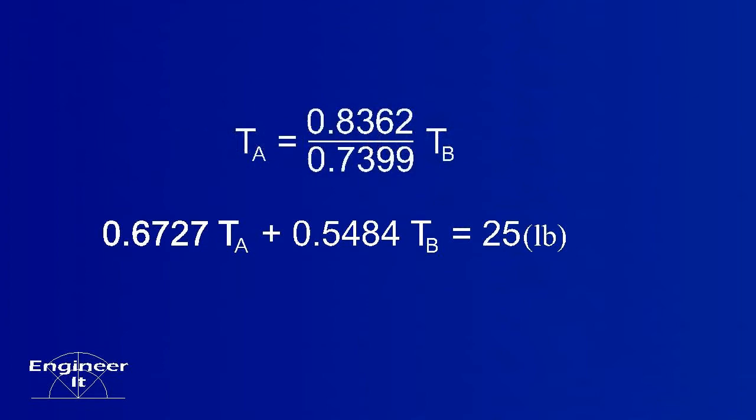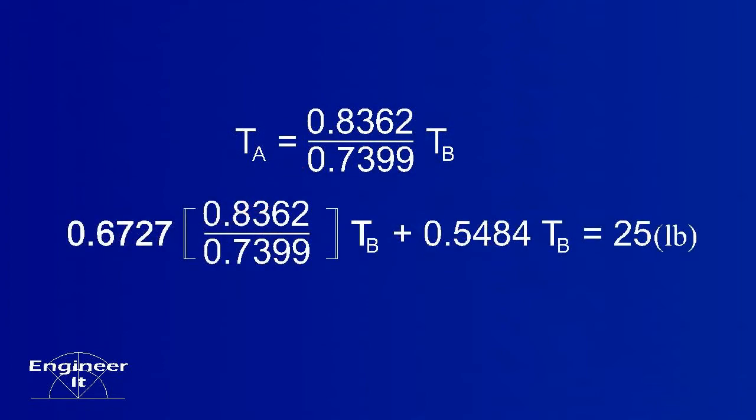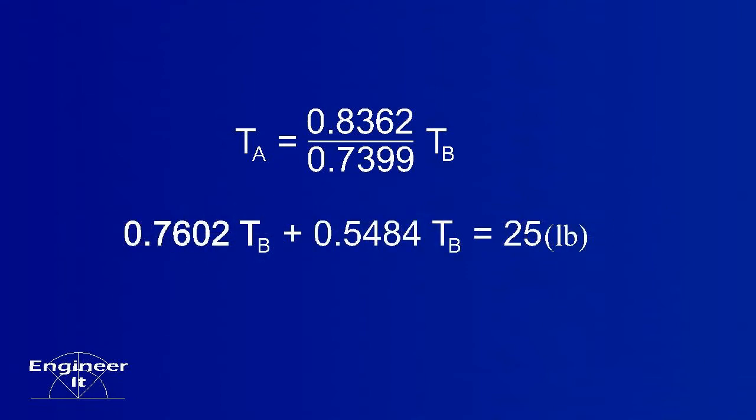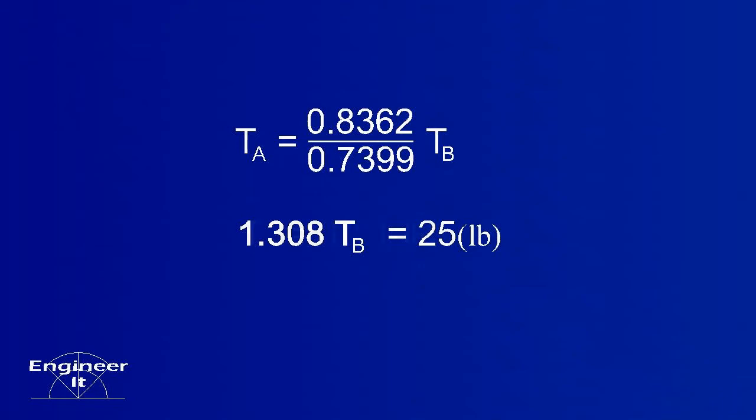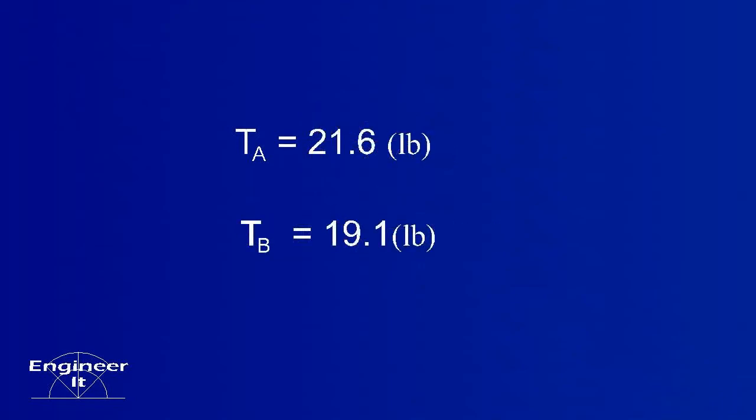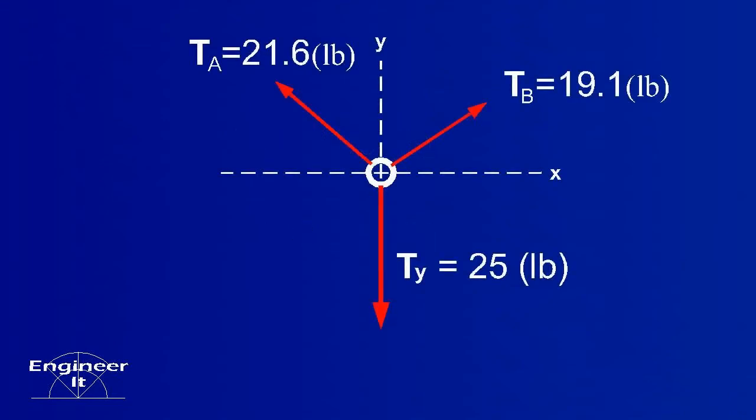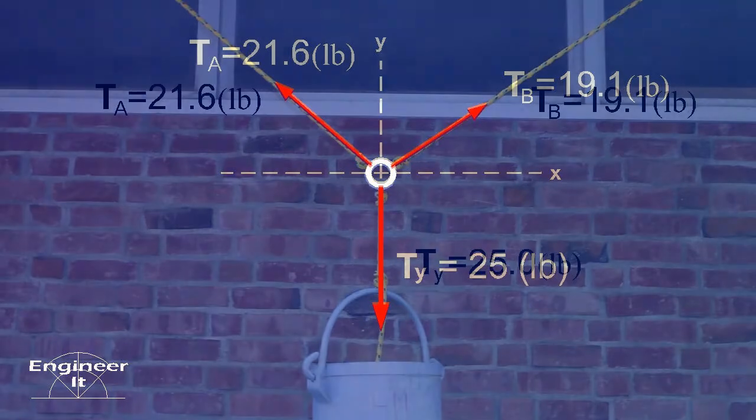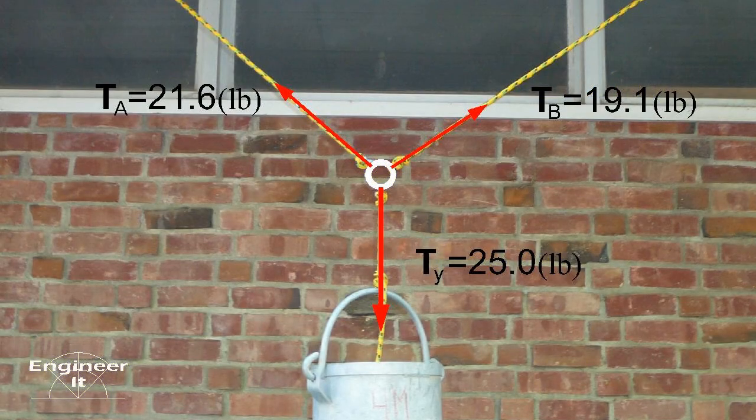Solve for TA, then substitute. Solve for TB, then compute TA. Now we know the tension in the ropes, which completes this problem.